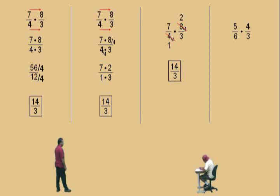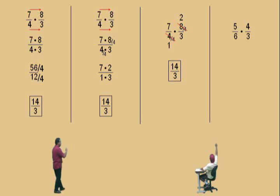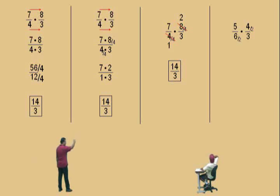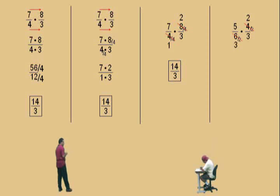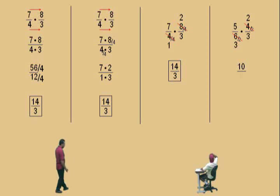Let's do another one. Five-sixths times four-thirds. Notice we're going to try and reduce before we multiply. We have a four on top and a six on the bottom — both four and six are divisible by two. So we divide the four by two and the six by two. Four divided by two is two, and six divided by two is three. Multiply across: five times two on top is ten, and three times three on the bottom is nine. The answer is ten-ninths.